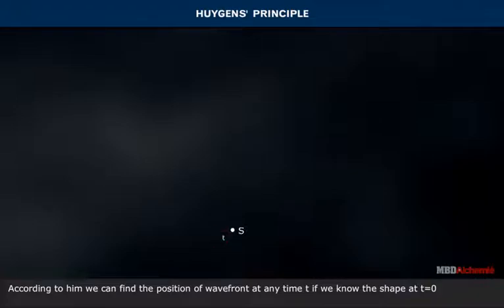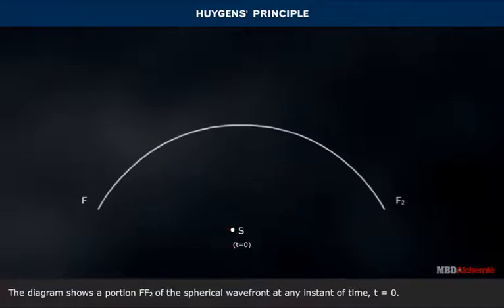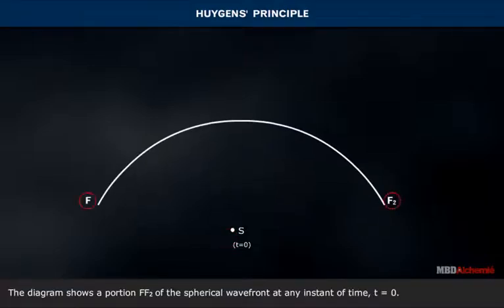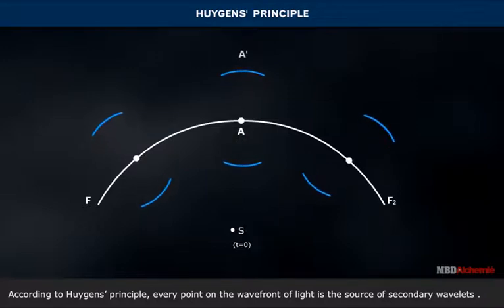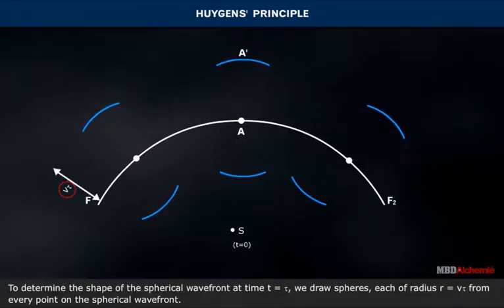Huygens gave a geometrical construction of wave propagation of light. According to him, we can find the position of a wavefront at any time t if we know its shape at t equals zero. The diagram shows a portion FF2 of the spherical wavefront at t equals zero. According to Huygens' principle, every point on the wavefront of light is the source of secondary wavelets. To determine the shape of the spherical wavefront at time t equals tau, we draw spheres each of radius r equals v·tau from every point on the spherical wavefront.